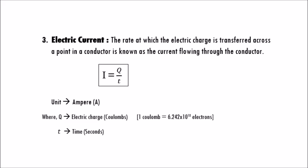Electric current: the rate at which the electric charge is transferred across a point in a conductor is known as the current flowing through the conductor. The unit of electric current is Ampere. It is given as I equals Q divided by T, where Q is the electric charge in coulombs — 1 coulomb equals 6.242 into 10 to the power of 18 electrons — and T is the time in seconds.